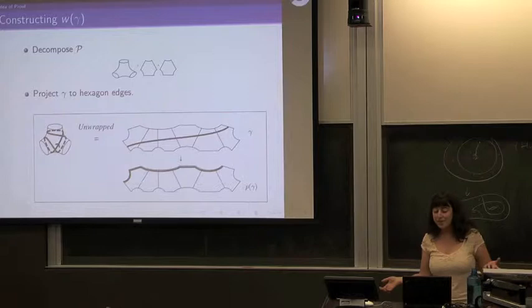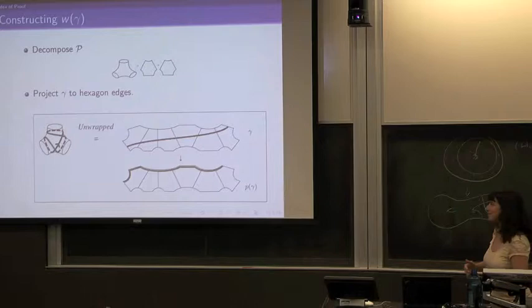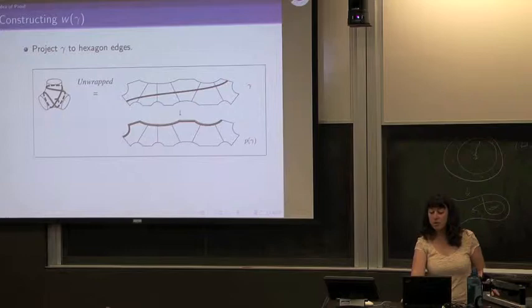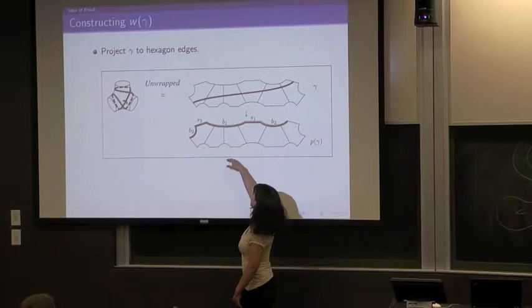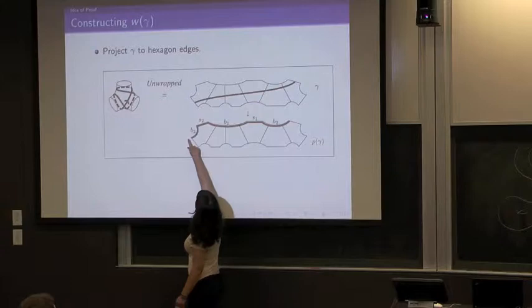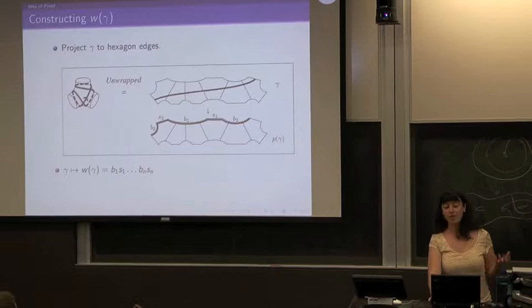Then we project. There's some way to project — you make sure you do it correctly. Now we want a word in the hexagon edges. We have these long subwords along the boundary — b1 is a subword with lots of letters — then some short seams, then b2 continues. We get this word in long sequences of boundary geodesic letters and short seams.